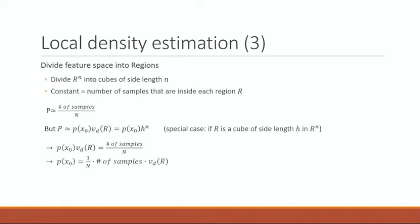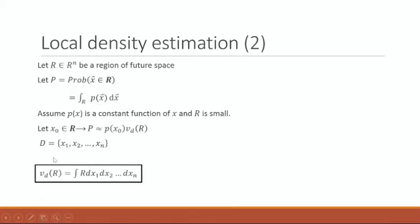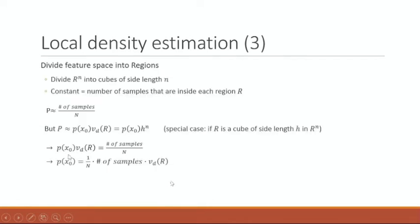Let's divide the feature space into regions, dividing R^n into cubes of side length N. We'll have a constant equal the number of samples that are inside each region R. That gives us P, the probability, equaling approximately the number of samples divided by N. Recall from before that probability equals density times volume. So we have density times volume equaling the number of samples divided by N. Pulling volume over, we have the density at X equaling 1 over N times the number of samples times the volume.